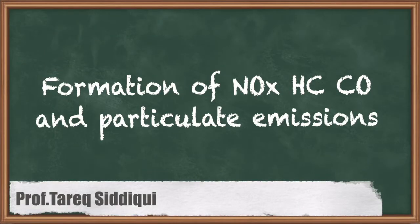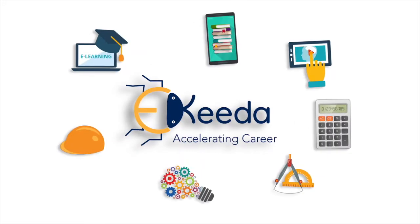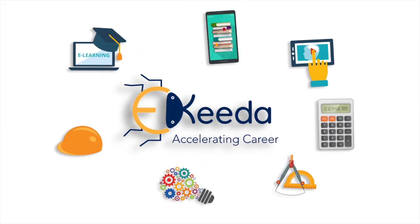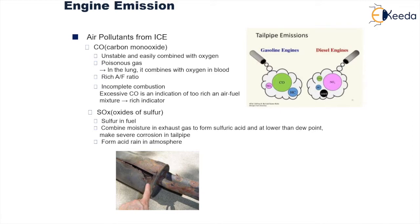Hello everyone. In this lecture we are going to see something about the formation of the different exhaust emissions. As shown in this image, what are the different emissions when we consider gasoline engines and diesel engines. For petrol or gasoline engines, the chief constituents are carbon monoxide, oxides of nitrogen, and hydrocarbons. Whereas for diesel engines, the chief elements are carbon, oxides of nitrogen, soot particles, hydrocarbons, and carbon monoxide.